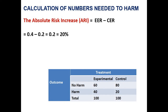Now we have to calculate absolute risk increase. Absolute risk increase means how much increase happens in risk because of the experiment. It is calculated by experimental event rate minus control event rate. That is 0.4 minus 0.2, which equals 0.2, or 20 percent. There is a 20 percent increase in experimental event rate because of the experiment.